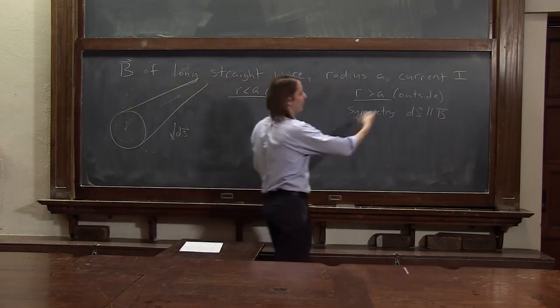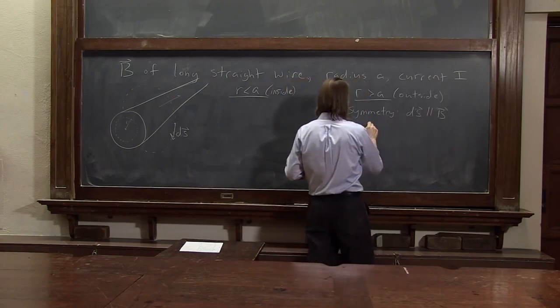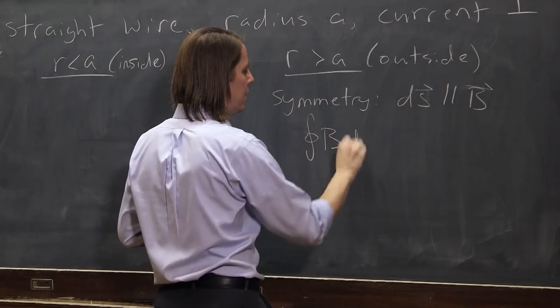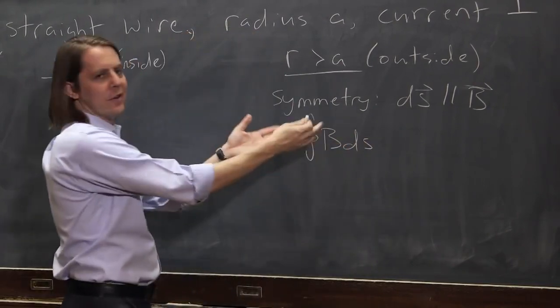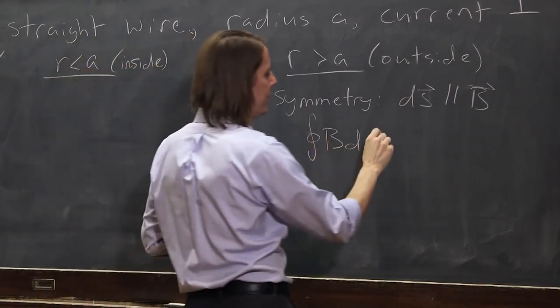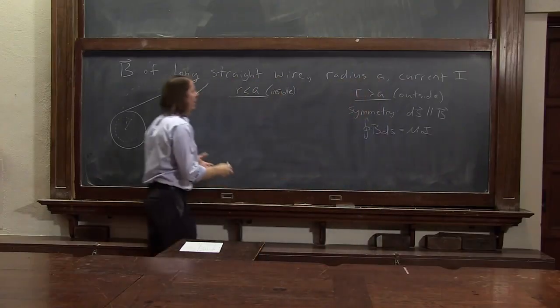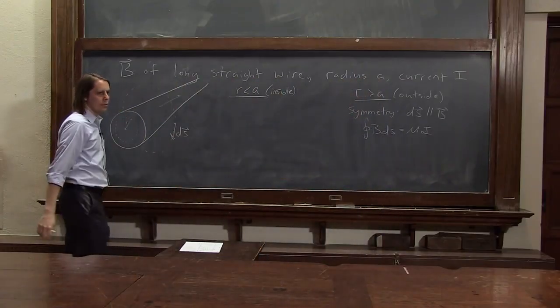If that's true, then they're parallel. It's just this magnitude times that magnitude. We can write it as the integral around the circle of B dS. Those are just magnitudes. I'm just writing them without the vector sign. It is mu naught and I, the total current I, goes through the loop.